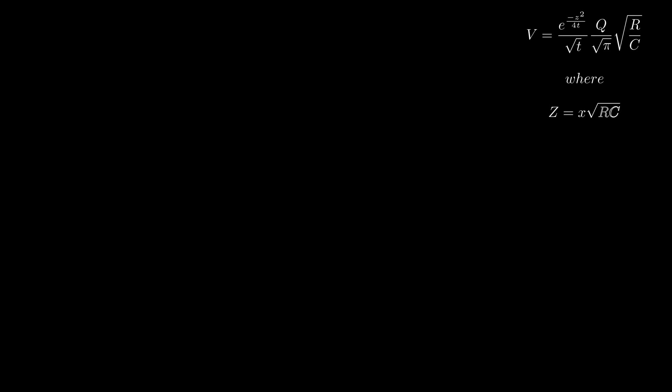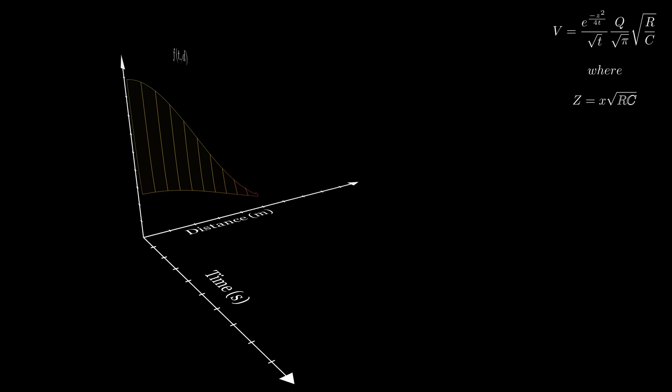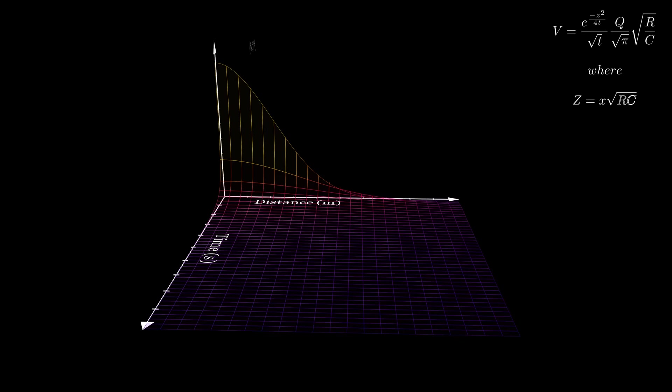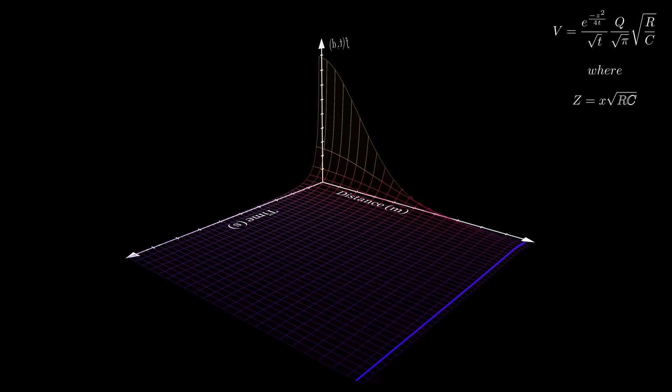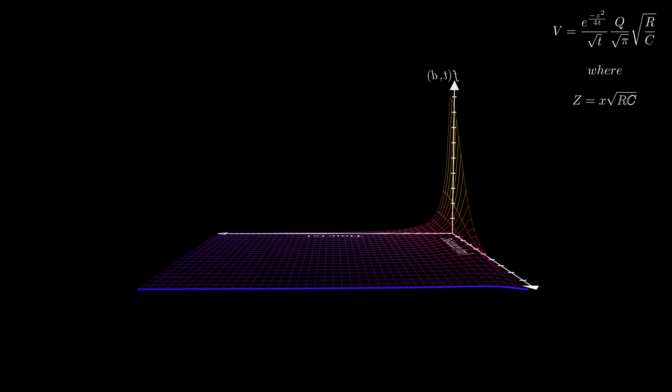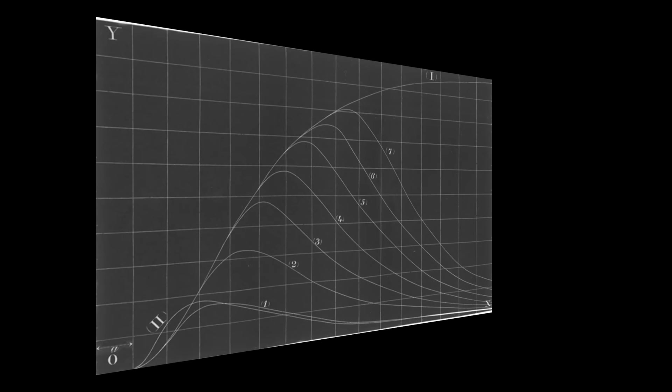With the help of modern technology, we can easily use this equation to produce a three-dimensional graph which shows the evolution of the pulse as a function of both time and distance. And we can draw slices across the time axis to show the expected arrival curve at a particular distance away from the transmitter. In his famous paper, Thomson produces his own set of curves, demonstrating how the pulse becomes dispersed as it travels.